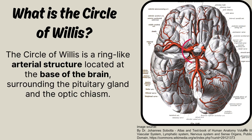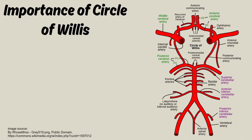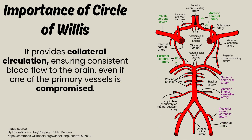The Circle of Willis is a ring-like arterial structure located at the base of the brain, surrounding the pituitary gland and the optic chiasm. Its importance lies in providing collateral circulation, ensuring consistent blood flow to the brain even if one of the primary vessels is compromised.